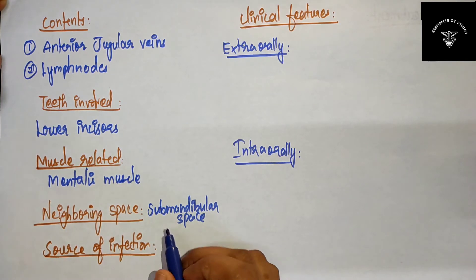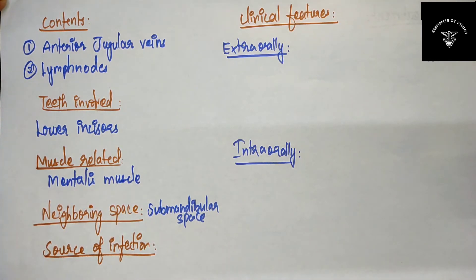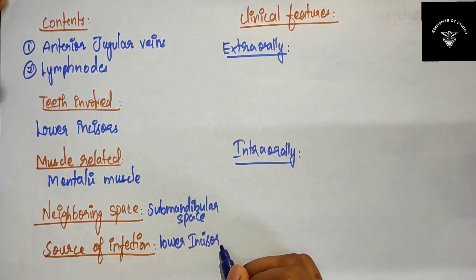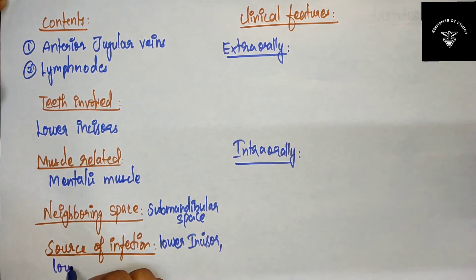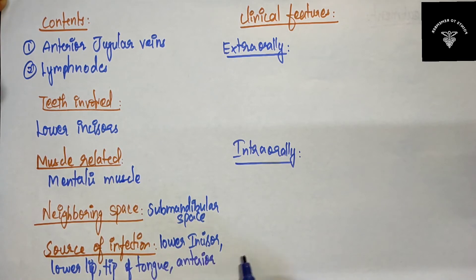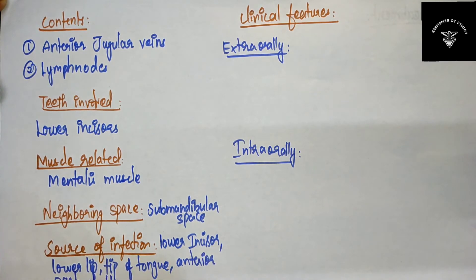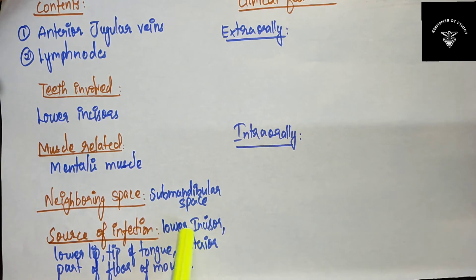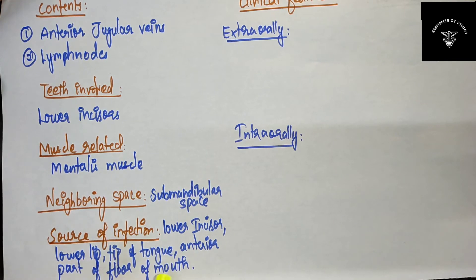Now, what are the sources of infection? They include infection from the lower incisors, lower lip, tip of the tongue, and the anterior part of the floor of the mouth.